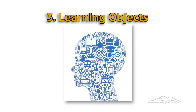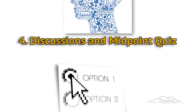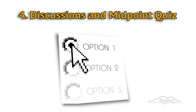Third, we'll talk about learning objects. We'll address how to find them and how to judge their value. Fourth, you'll participate in a few discussions and take an exam to assess your learning. This exam will cover Part 1 of this course, which includes the four modules you've completed so far.